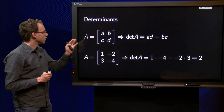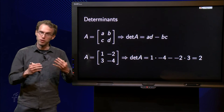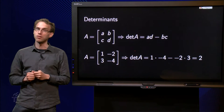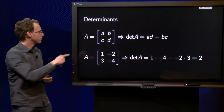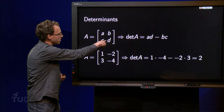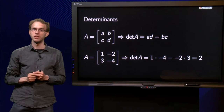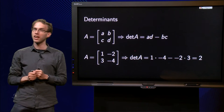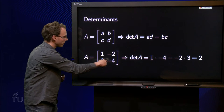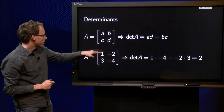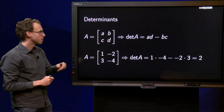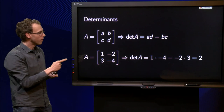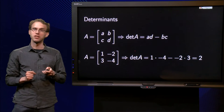Let's start with the 2×2 case to refresh. If you have a matrix A equals [a, b; c, d], the determinant equals a times d minus b times c. So in an example, the determinant of this matrix A over here equals 1 times minus 4 minus minus 2 times 3, which gives minus 4 plus 6, equals 2.